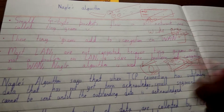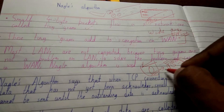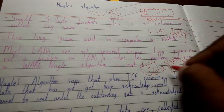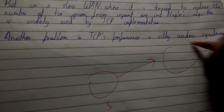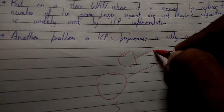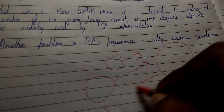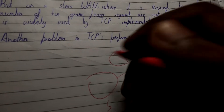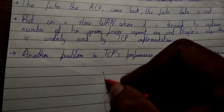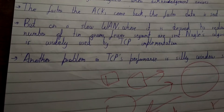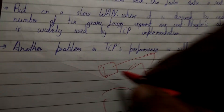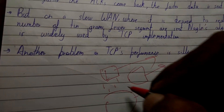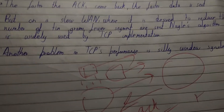Similarly, Nagle's algorithm says that when some amount of data has been sent from sender to receiver, until the sender does not receive the acknowledgement, more data is not sent. Instead, it is accumulated in the TCP layer or TCP connection and later sent as a segment rather than as tiny grams — so it will not cause congestion in WAN.